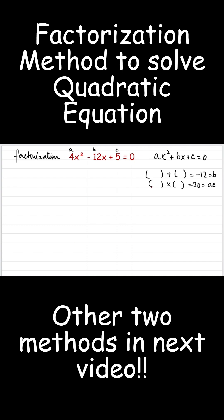Clearly, the numbers are minus 2 and minus 10 because minus 2 times minus 10 is 20 plus 20 and minus 2 added to minus 10 is minus 12.